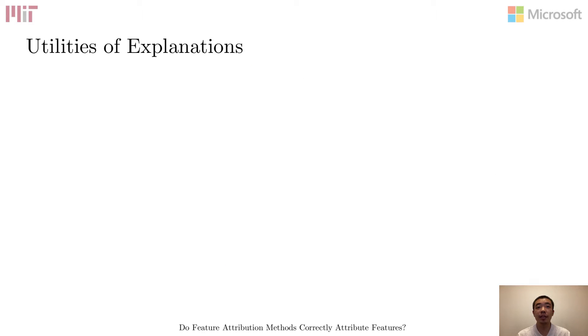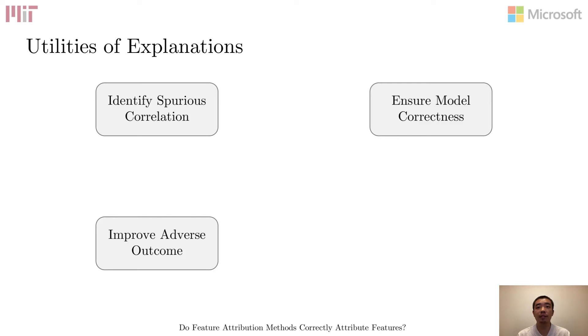So why are explanations useful? Well, they can serve multiple purposes. For example, they can inform developers that the model relies on certain spurious correlation or assure them that the model works correctly as intended. In scenarios where the model makes certain decisions like credit card approval, the explanation for an unfavorable outcome like a denied application could also suggest actions that the person can take to improve the outcome, such as obtaining a higher income or requesting a lower credit limit.